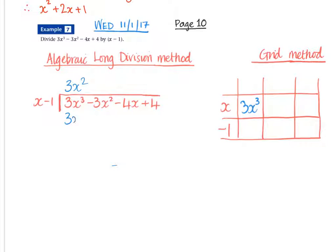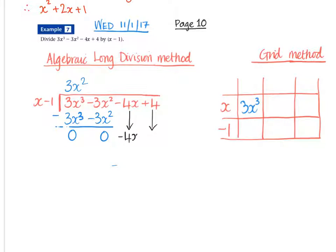We multiply underneath. There's a slight problem there - when we subtract, we get 0. So what we have to do is take down the minus 4x and the plus 4, so that goes into this position here. We just ignore the 0s on the left-hand side.